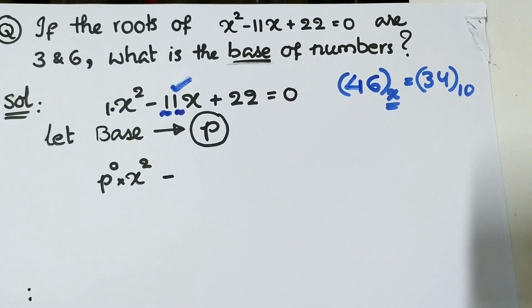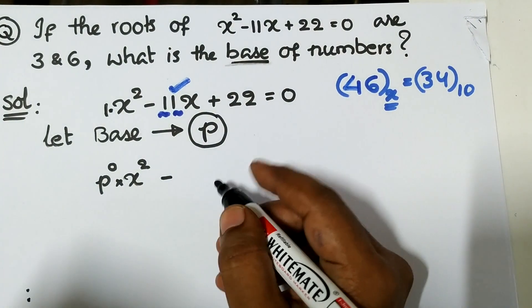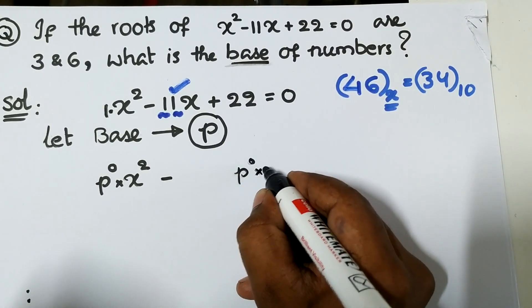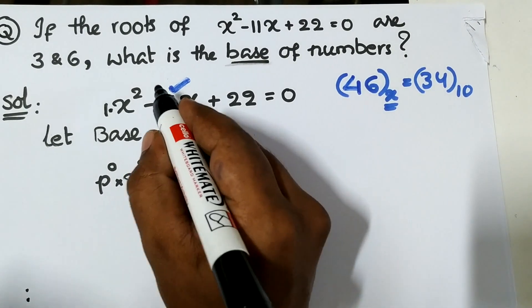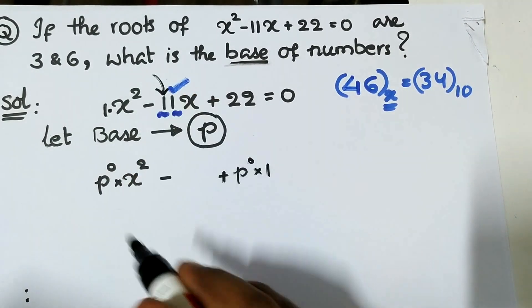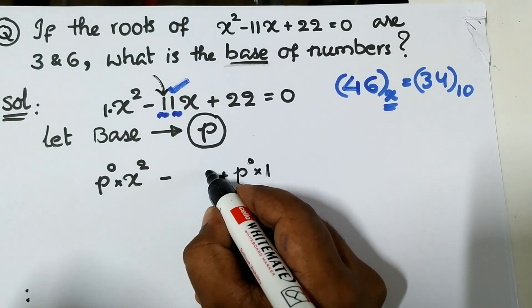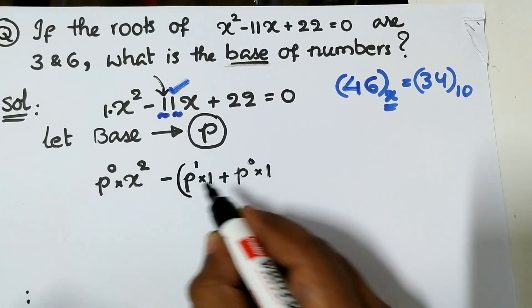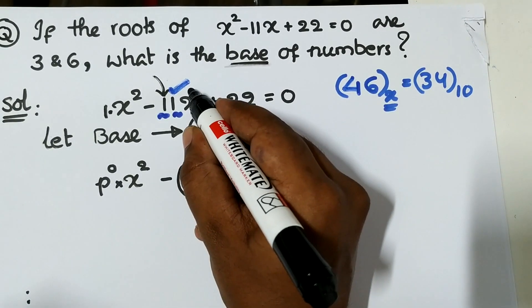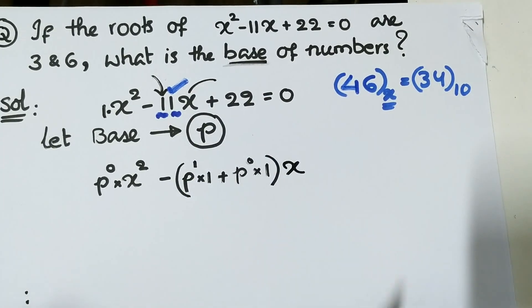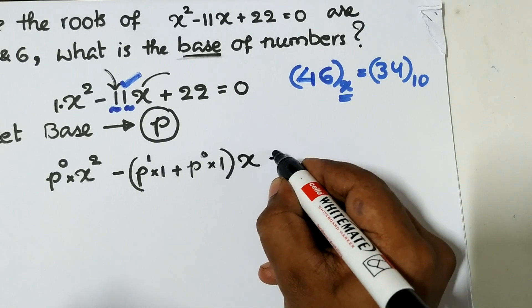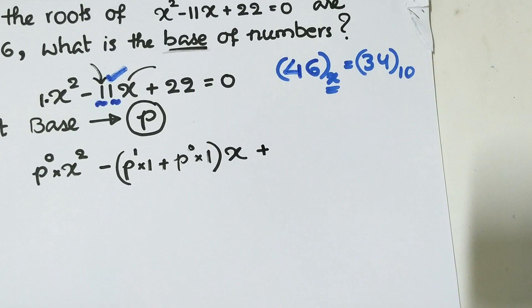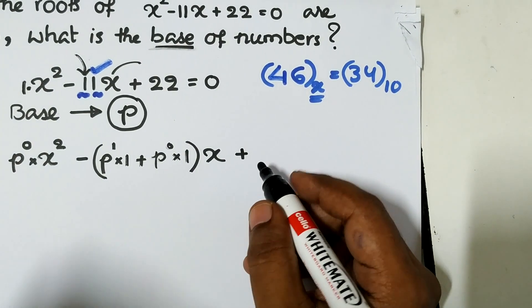For this digit, I have P⁰ multiplied by 1, plus for this one, coefficient multiplied by positional weight P¹, all multiplied by x.